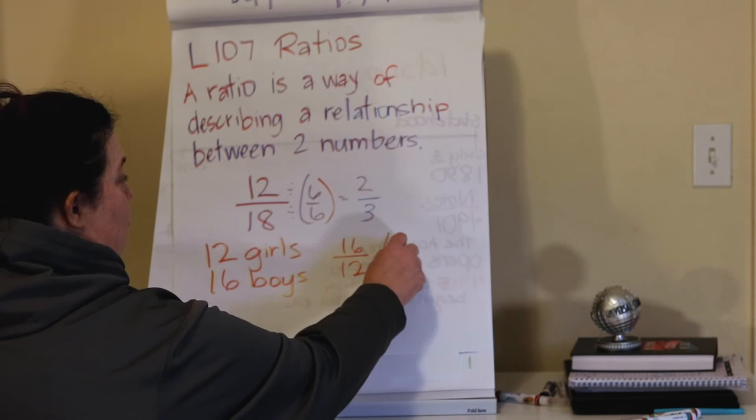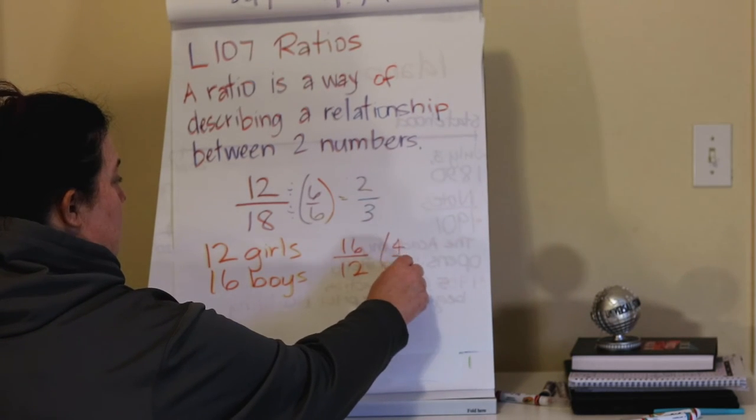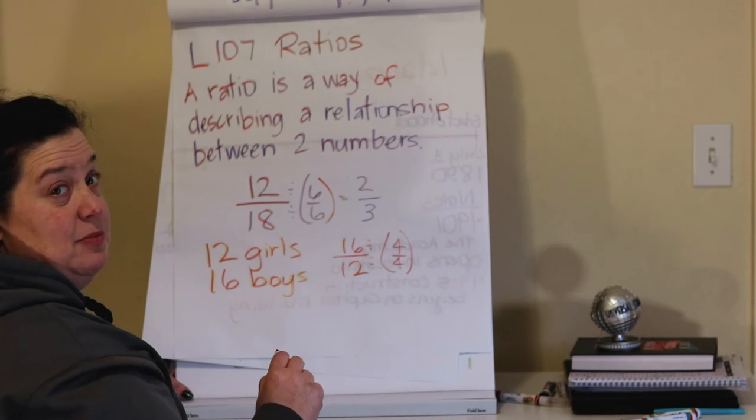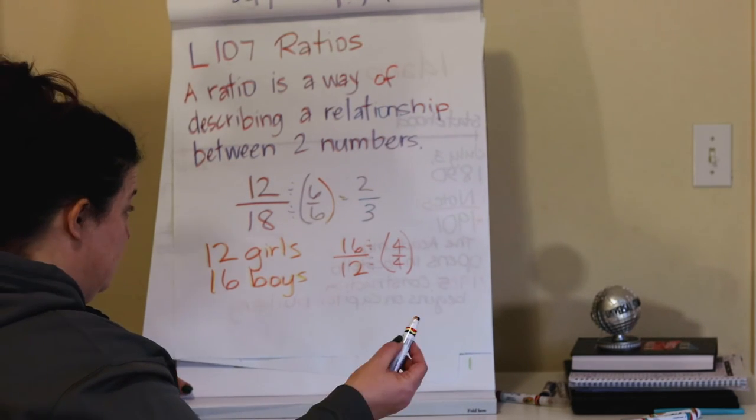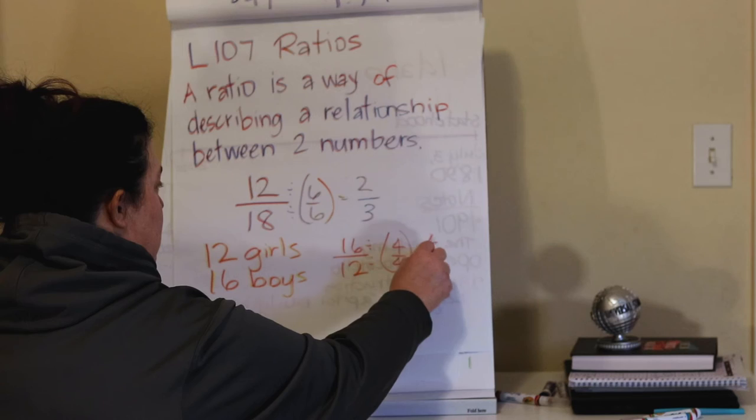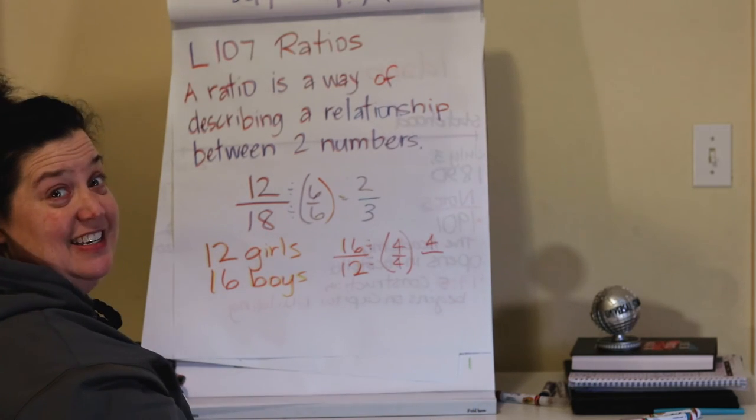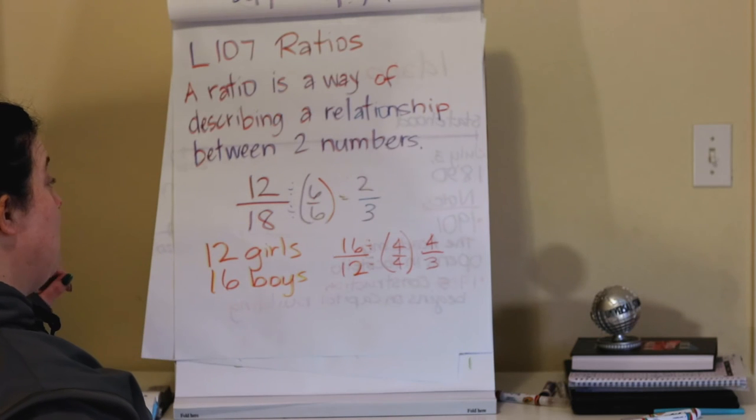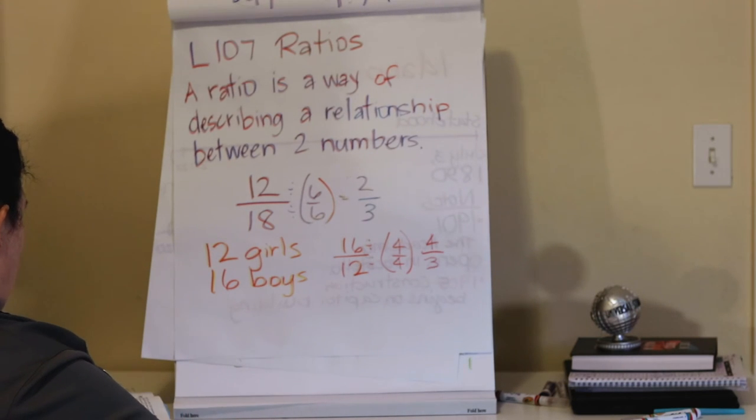Correct. 4. So we're going to divide each part of the fraction by 4. 16 divided by 4 is 4. Very good. 12 divided by 4 is 3. Excellent. So our ratio of boys to girls is 4 to 3.